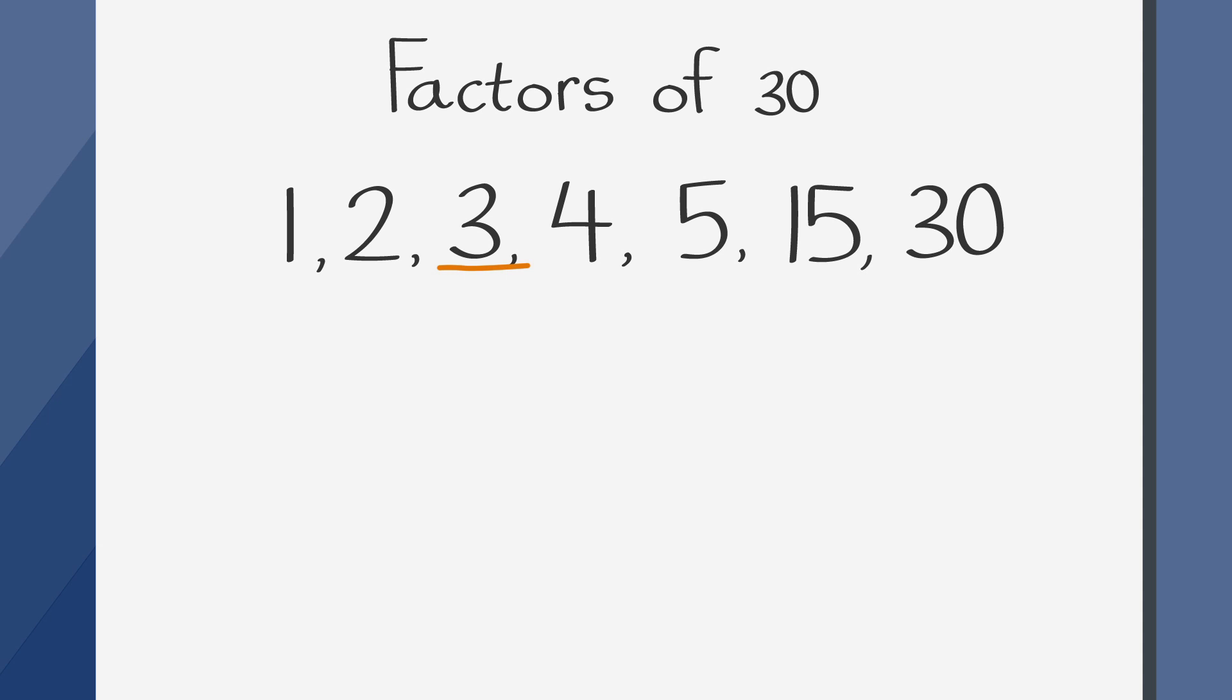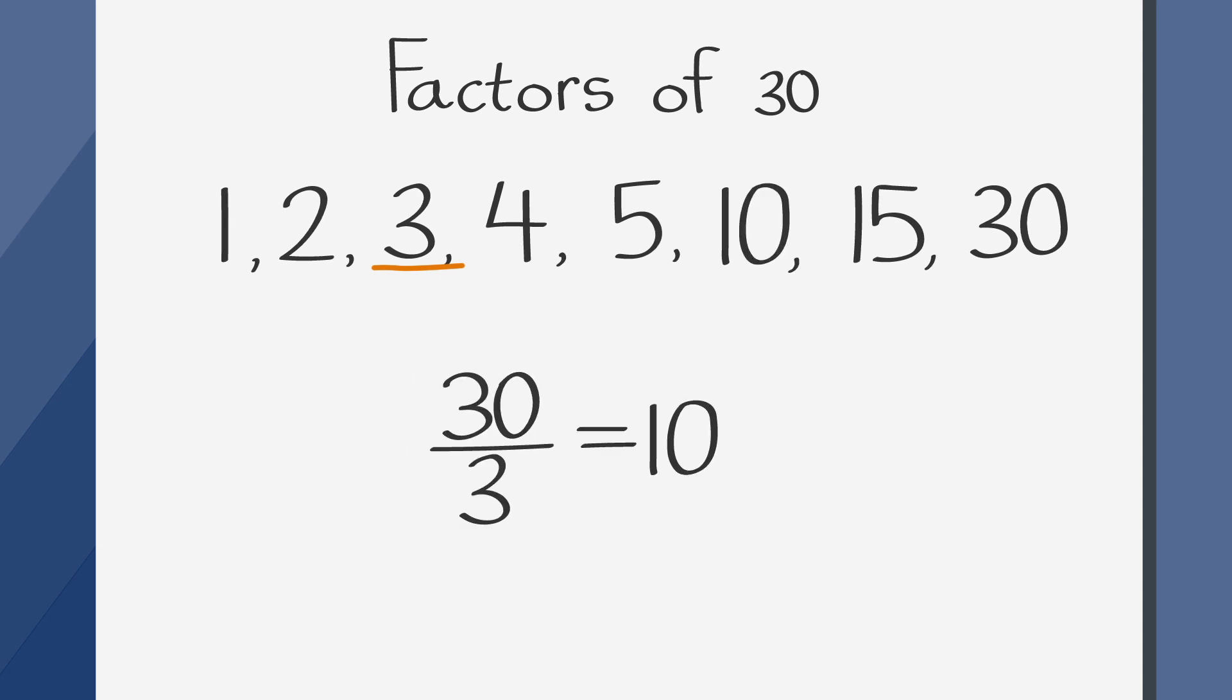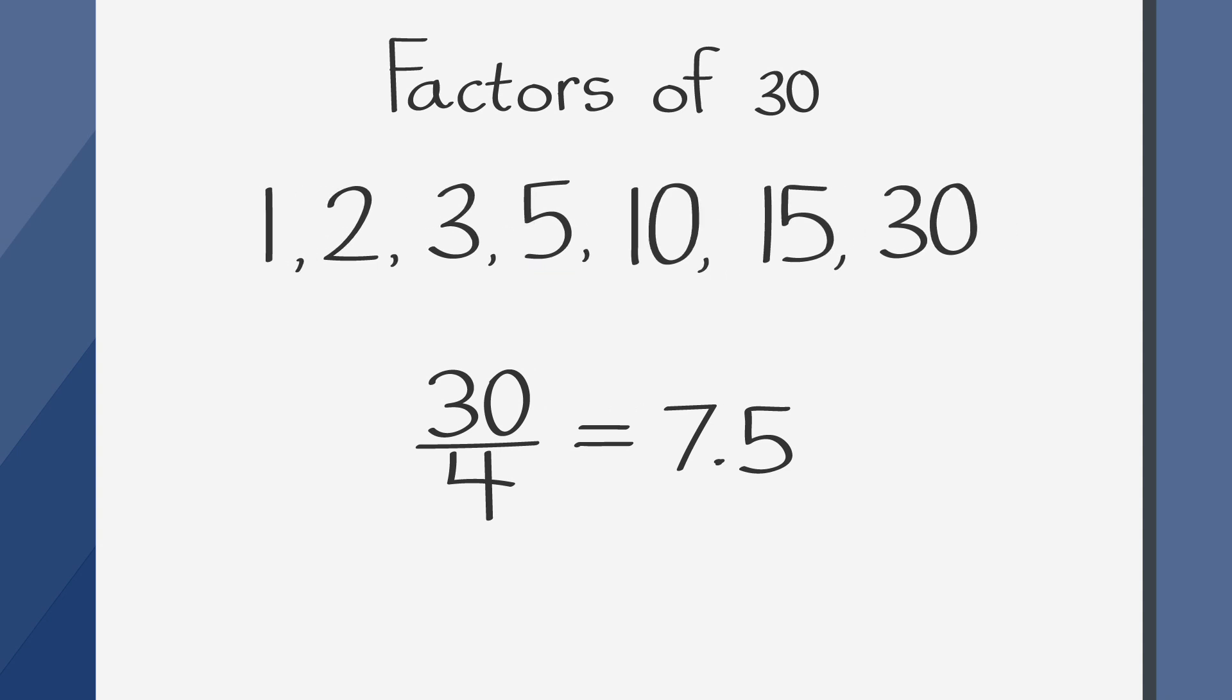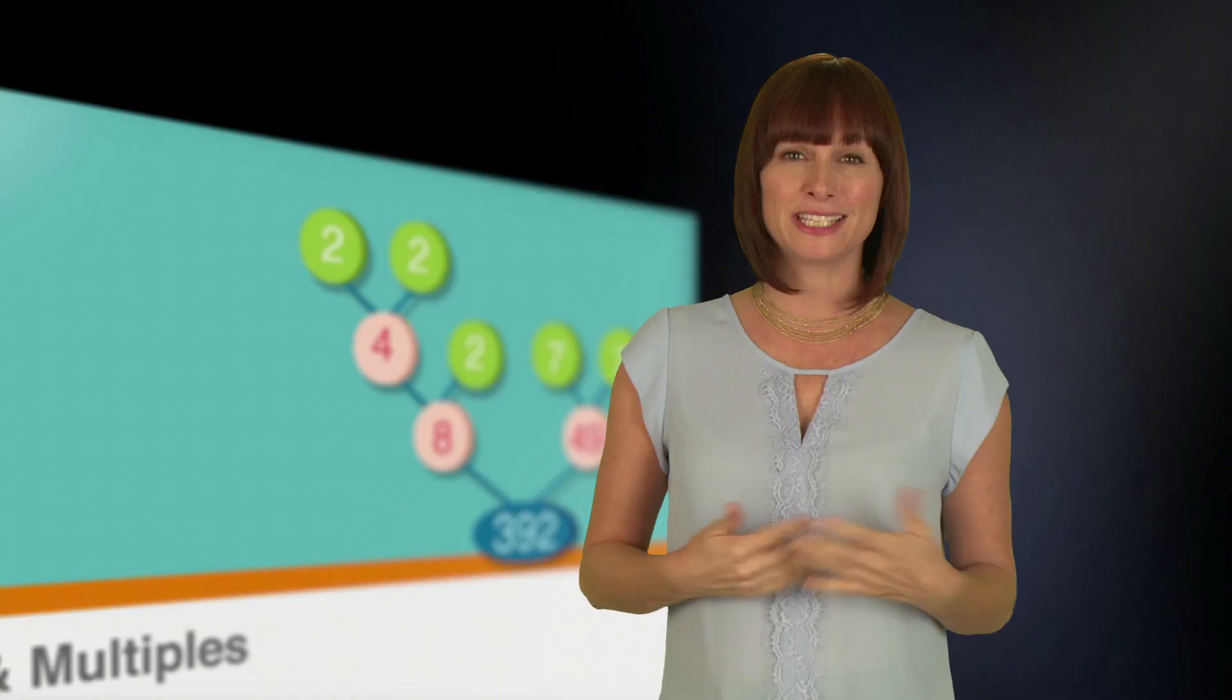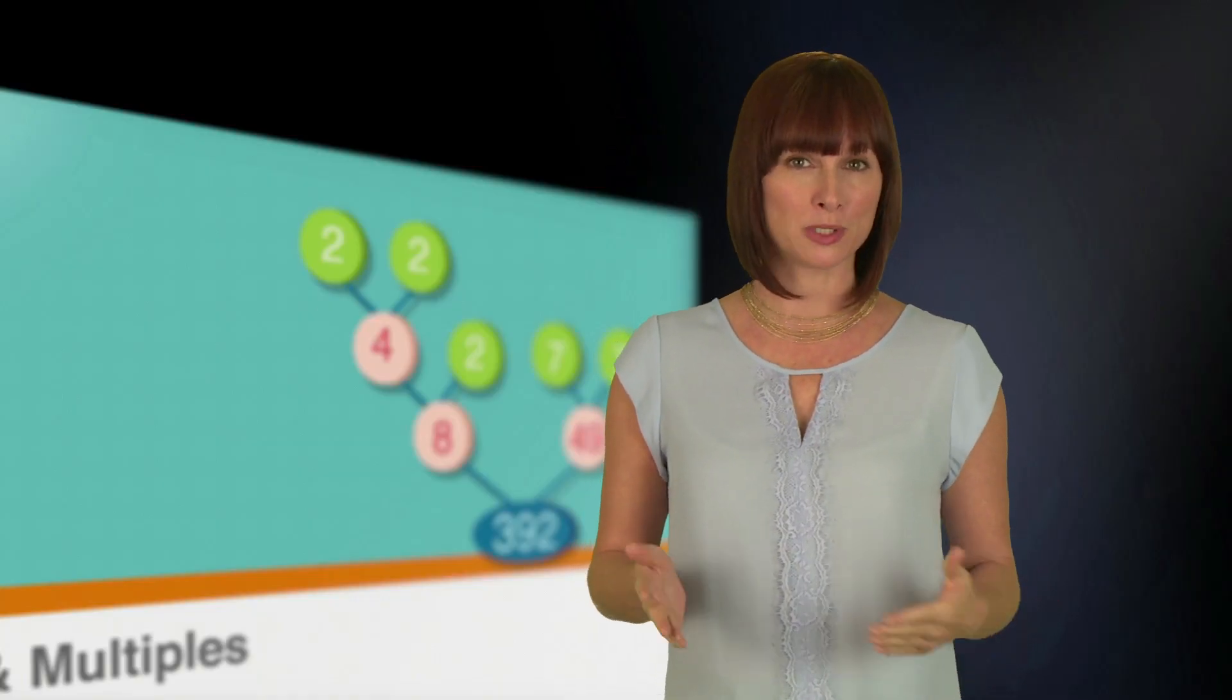Now we do the same with 3. 30 divided by 3 is 10. 10 is also a factor of 30. Now let's consider 4. 30 divided by 4 does not divide evenly, so we want to remove 4 from our list of factors. 5 is also a factor of 30, so we want to keep 5 in our list. And since 30 divided by 5 equals 6, we want to add 6 to our list of factors as well. 30 did have a lot of factors, but going from 2 to the square root made sure that we found all of them.